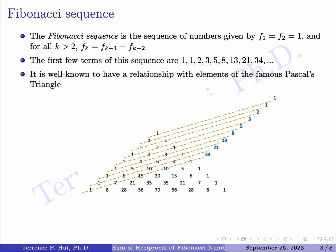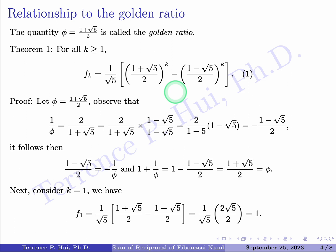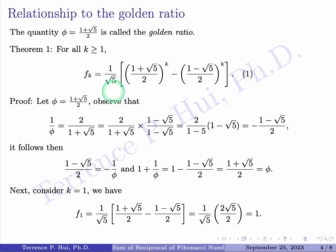Now let's look at the relationship with another interesting constant called the golden ratio, denoted by the lowercase Greek letter φ, defined as (1 + √5) / 2. We want to show Theorem 1: for all k ≥ 1, F_k = (1/√5) · [φ^k − ((1 − √5)/2)^k]. We'll prove this using the principle of mathematical induction, but first let's establish some properties of φ.